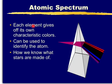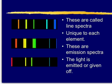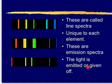Each element gives off its own characteristic colours, and this can be used to identify the atom — this is how we know what elements stars are made of. These are called line spectra — each one is a spectrum (plural: spectra) — unique to each element. These are emission spectra; in other words, the colours given off by each element — the light is emitted or given off.